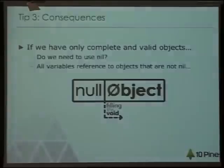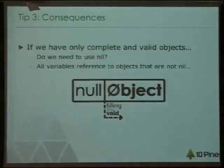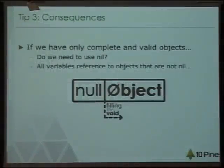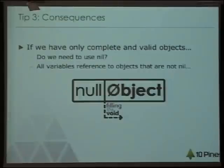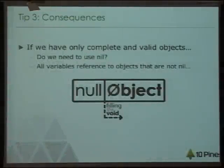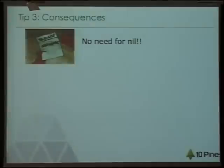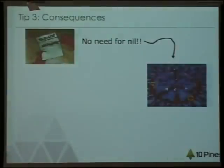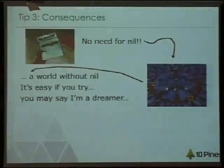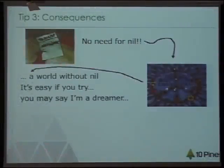Now we have objects that are always complete and always valid. So we can start thinking about the consequences. The first one: do we need nil? If we only have complete objects and those objects are valid, do we need nil? The answer is no — we don't need it. Not for these objects. Imagine a world without nil!